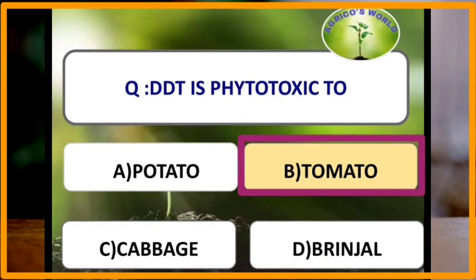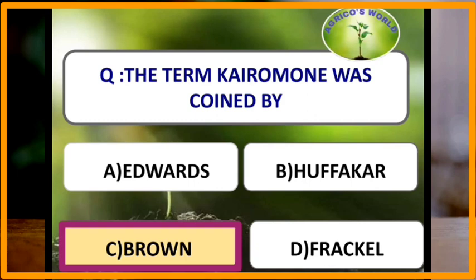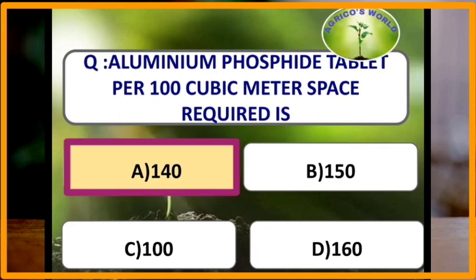The term kairomone was coined by the scientist Brown. Aluminum phosphide tablets required per hundred cubic meter of space is 140.